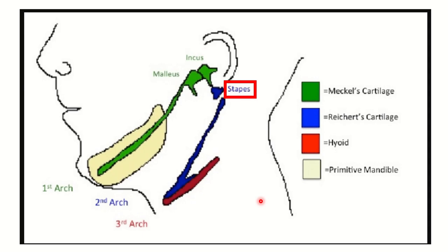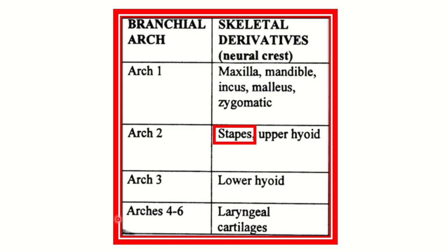From the third arch, the hyoid bone is derived. In this picture we can also see the stapes and Reichert's cartilage, both arising from the second arch. Here is the complete skeletal list of branchial arch origins — arches one, two, three, and four to six.